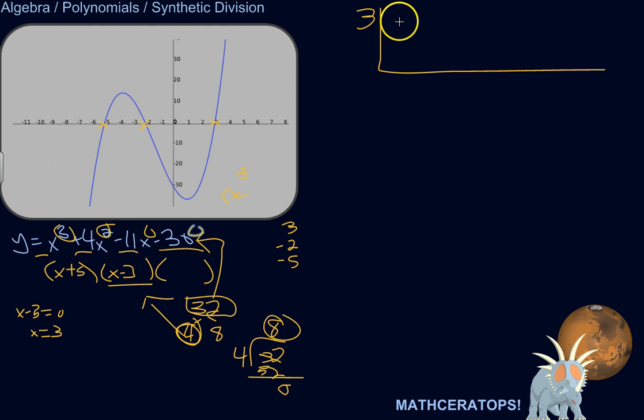Okay, and then write the coefficients here. So coefficients are 1, 4, negative 11, and negative 30. Step 1 is I just bring this guy down.